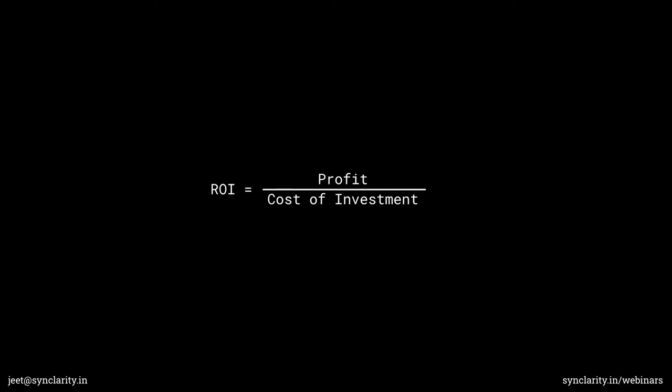To simplify this further: imagine you are doing a campaign costing around 30,000. When you make a profit of 300,000, that is a 10x return. This is what ROI normally is and that's how it's supposed to be calculated. What happens in marketing is there are a lot of different elements which come into play, because of which it gets difficult.